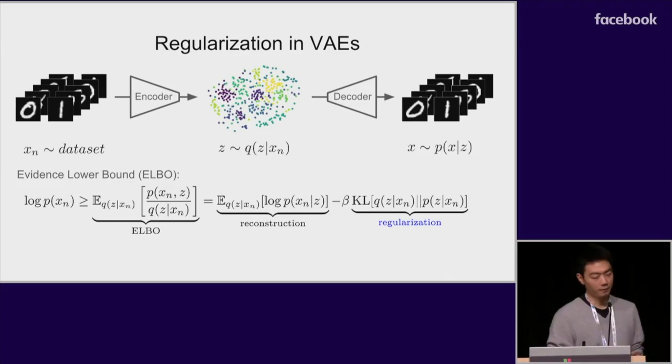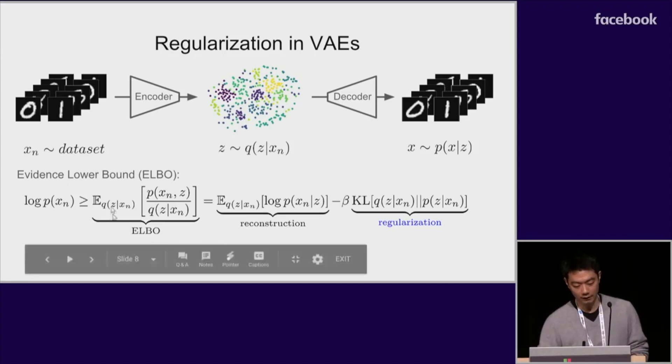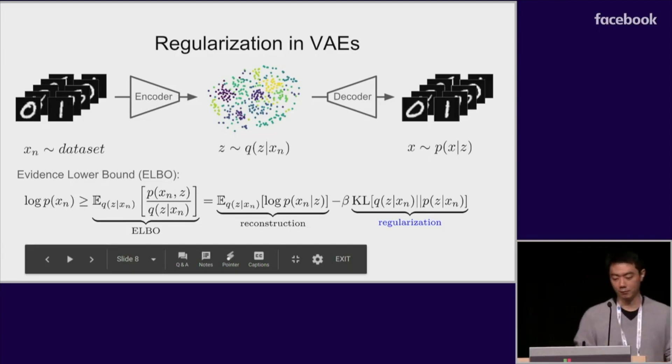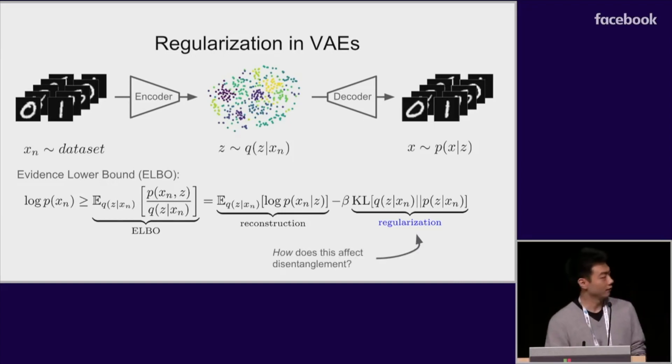A recent algorithm for learning a disentangled representation called the beta VAE simply adds a heavy weight on this regularization term by using a value of beta that is greater than one. Part of this work specifically looks into what effect this term has in the context of disentangling.